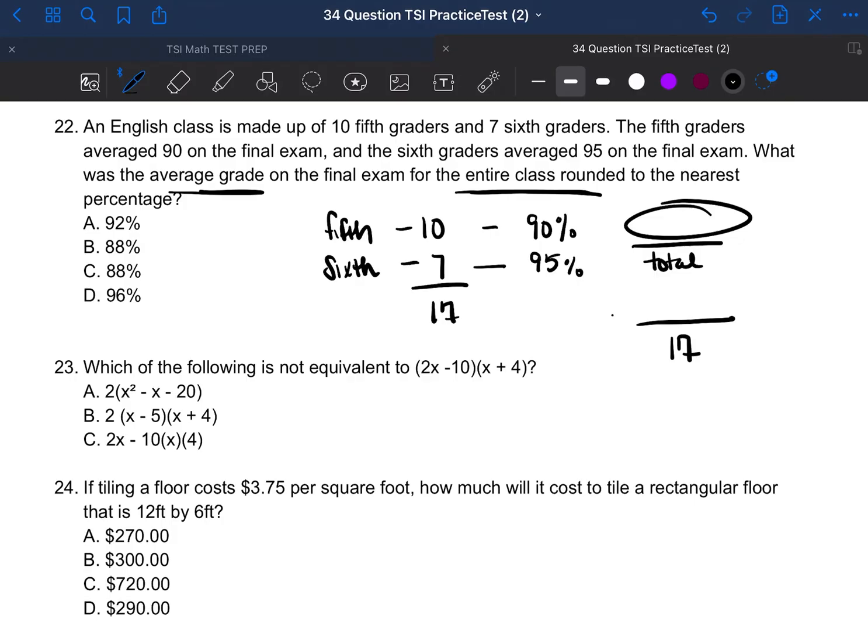Now, this top piece of information needs to represent 17 different scores on the test. So we need fifth graders, what they scored and the sixth graders, what they scored. Most people, when they look at this, they're going to put 95 plus 90 and then they're going to divide it by 17. But that is not correct.